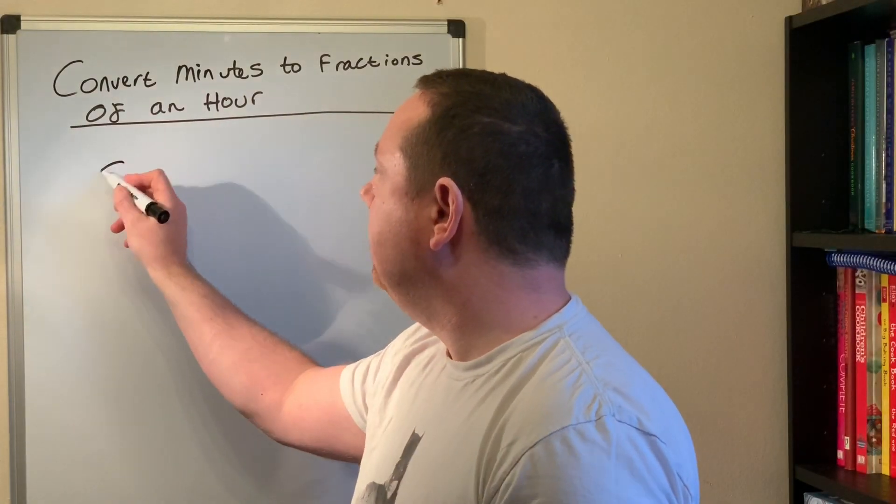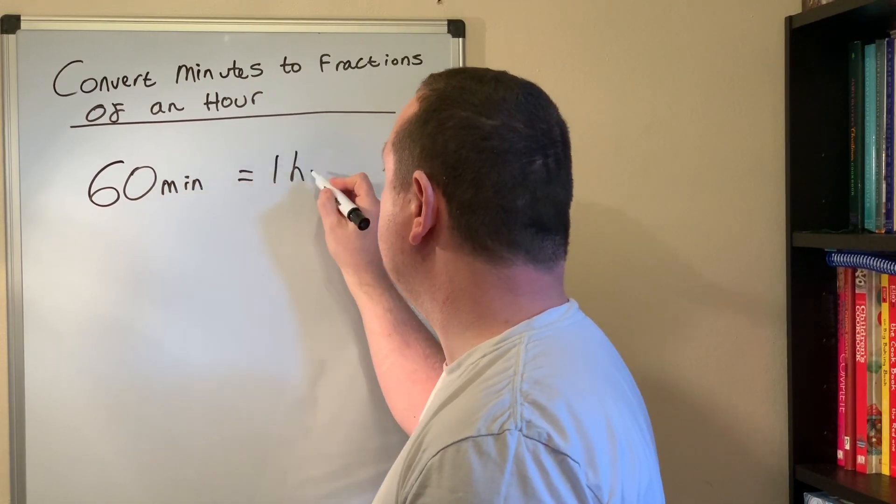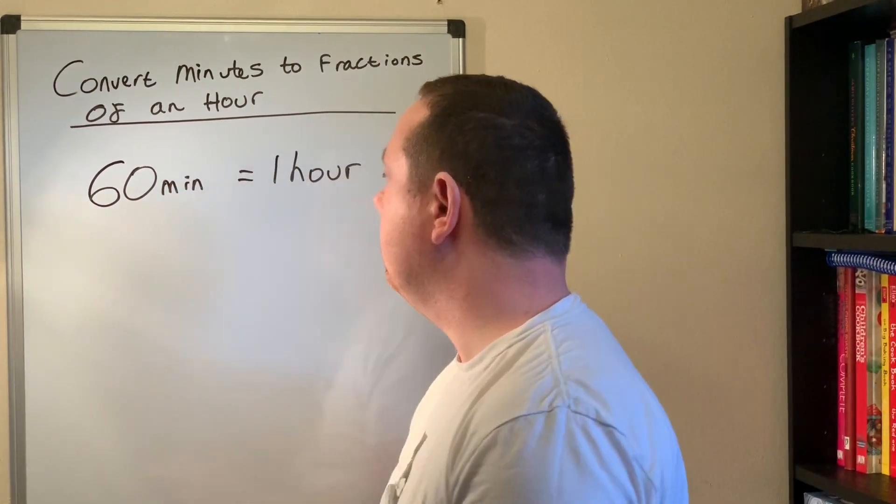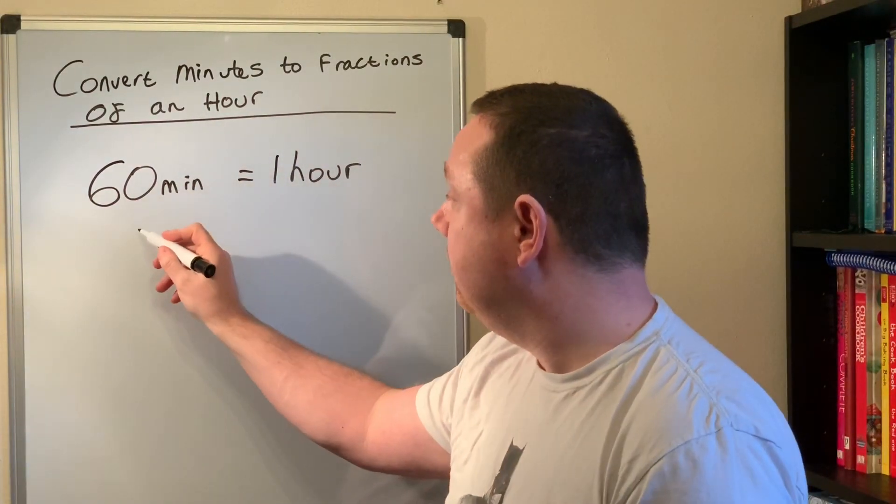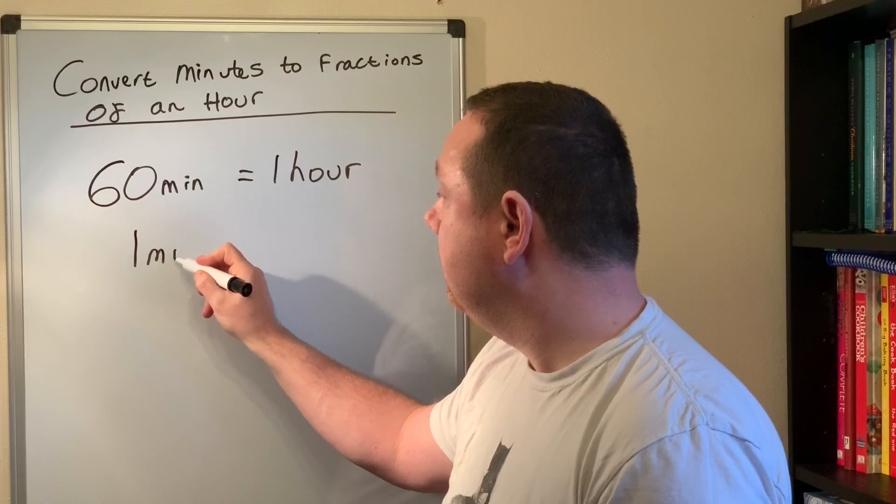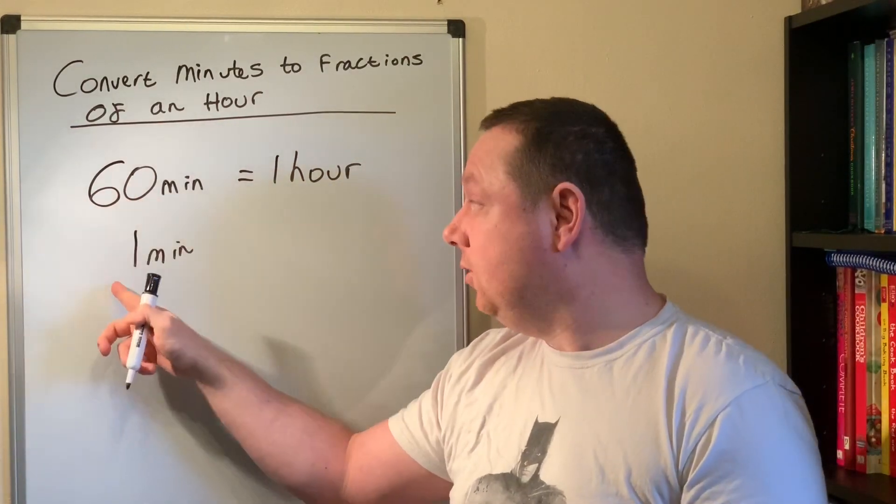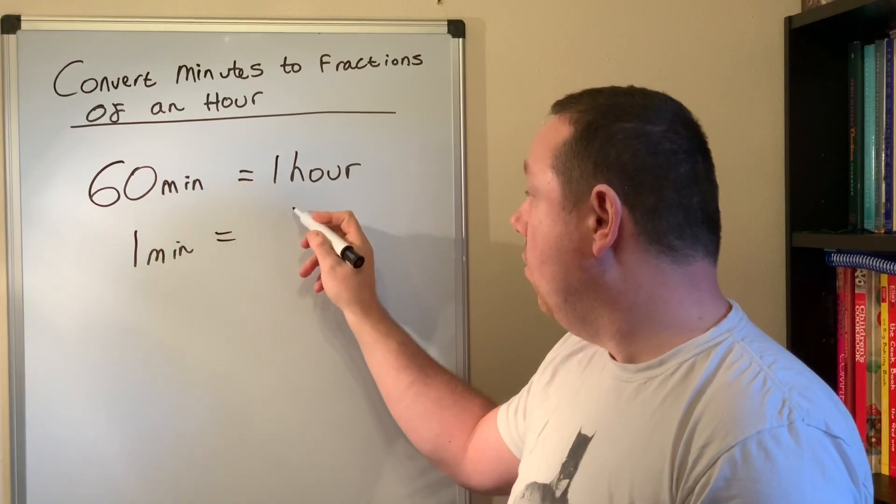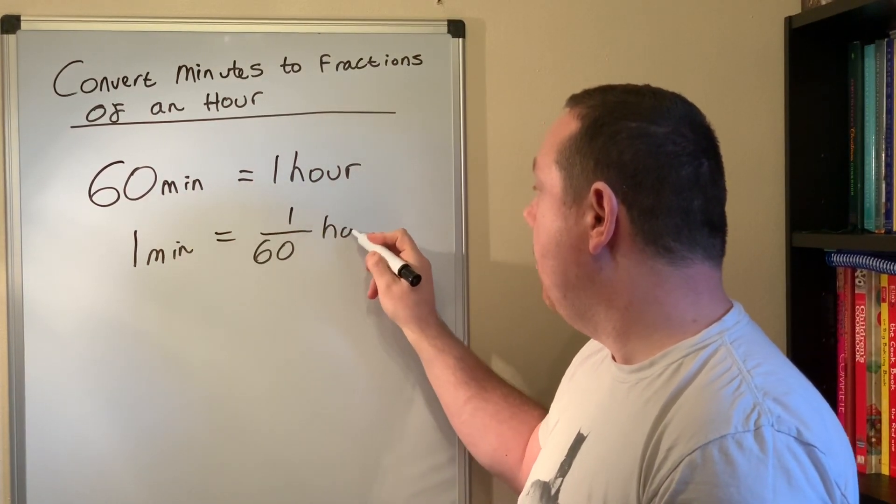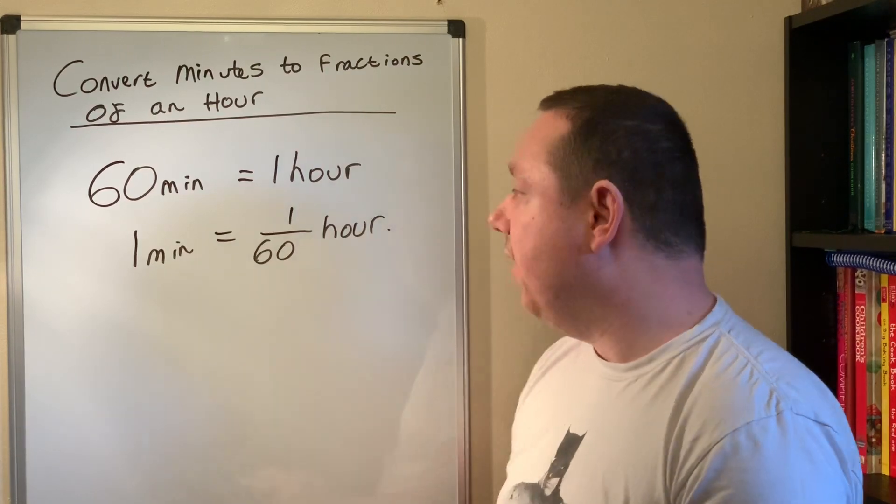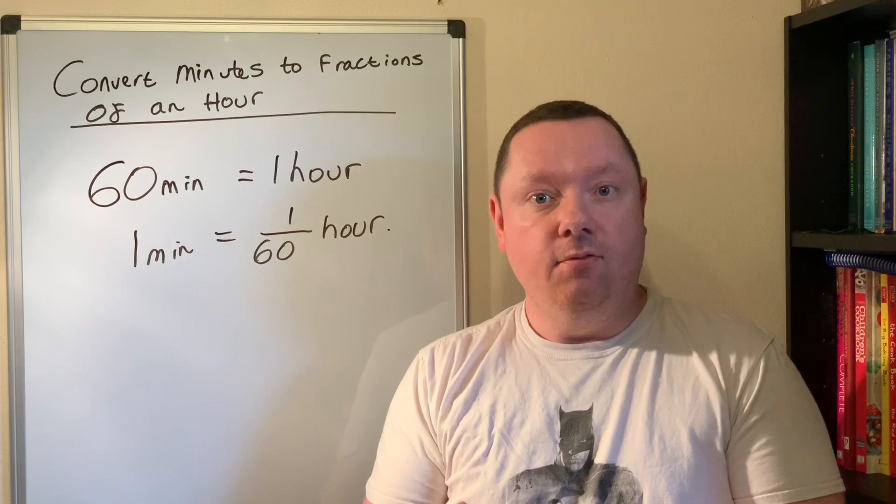We all know 60 minutes is equal to one hour. So that means if I had one minute, well one minute is 60 divided by 60 which is one. I would have 1 out of 60 hours and that is the key point here that minutes are 1/60th of an hour.